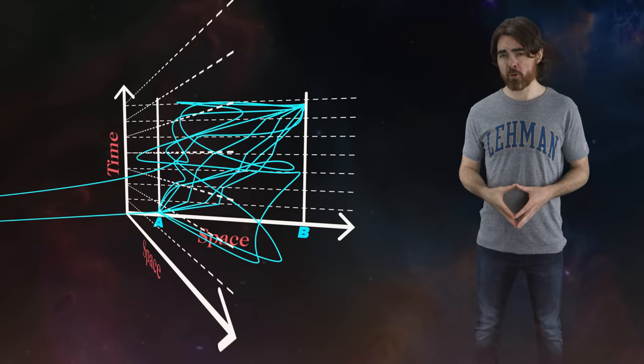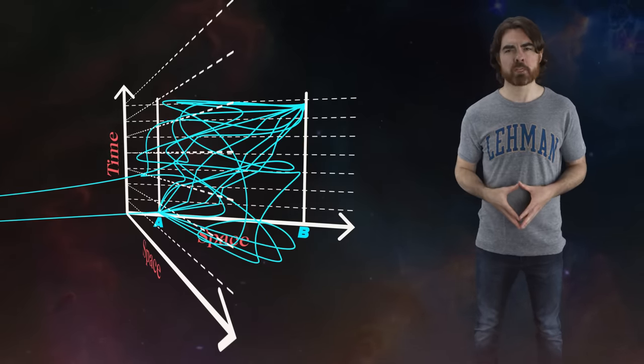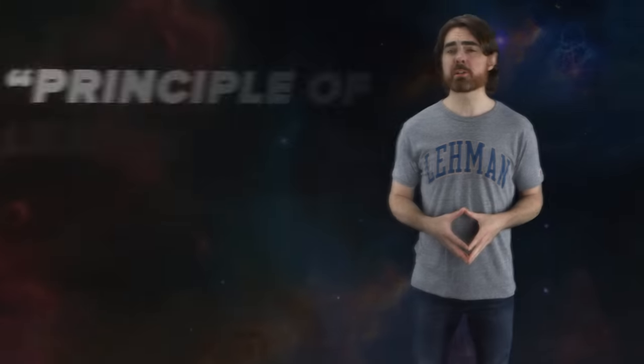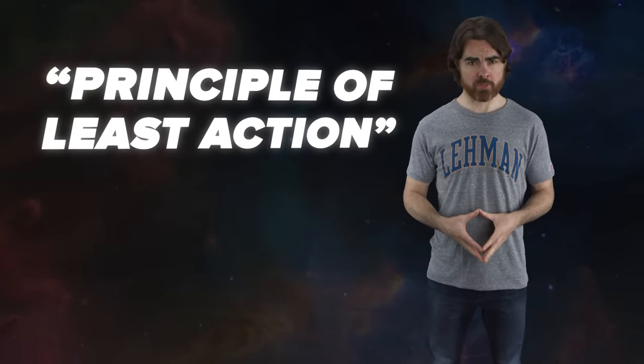There was absolutely no physics in this description so far — not even the limit of the speed of light. The amazing thing about the path integral formulation is that Feynman added one and only one piece of real physics, and from that it was possible for him and others to re-derive all of quantum mechanics. That piece of physics was the principle of least action, borrowed from old-school classical physics.